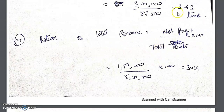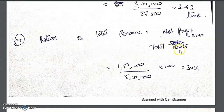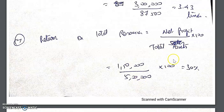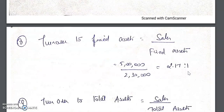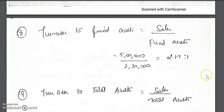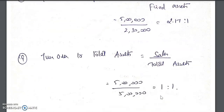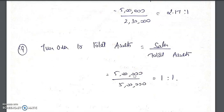Return on total resources = net profit divided by total assets. Since tax rate is not given, we use net profit directly. Net profit divided by total assets = 30 percent. Fixed asset turnover = sales divided by fixed assets = 2.17 times. Total asset turnover = sales divided by total assets, which gives 1:1, meaning sales equal total assets.